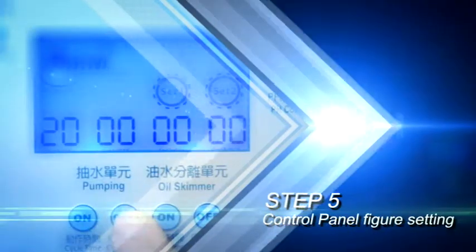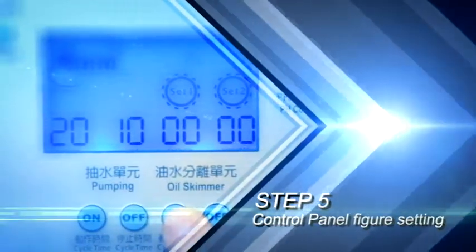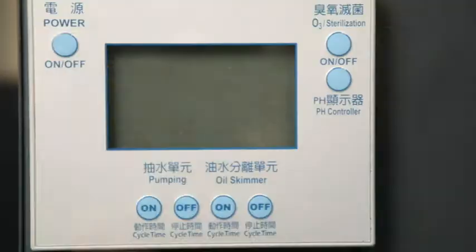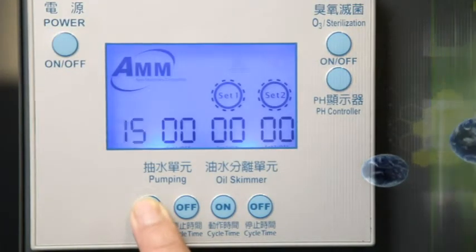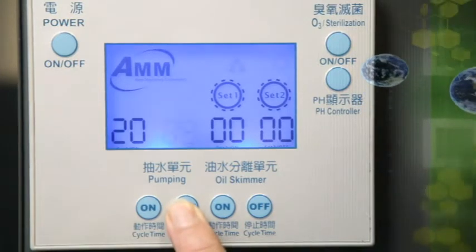Step 5. Control panel figure setting. Water pumping unit: Action time, 20 minutes. Stopping time, 10 minutes.